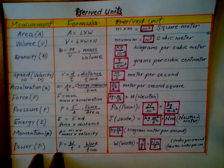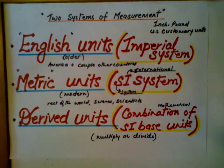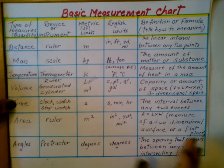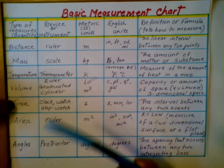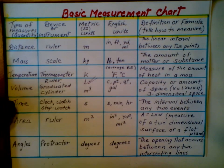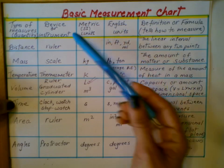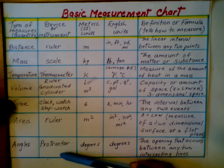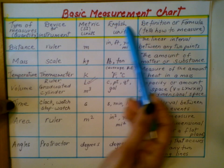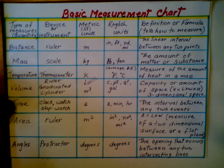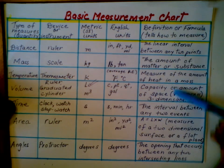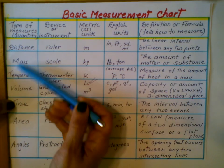Also included is the basic measurement chart. You have physical quantities, which are base quantities and derived. Distance, mass, temperature, volume, time, area, and angles. Examples of instruments or devices are given here for measuring these quantities. You have metric and SI units, and English units. In the last column, you have definitions or formulas for each of these physical quantities.